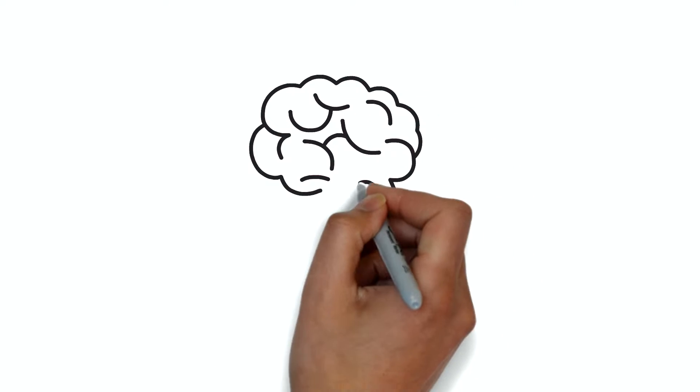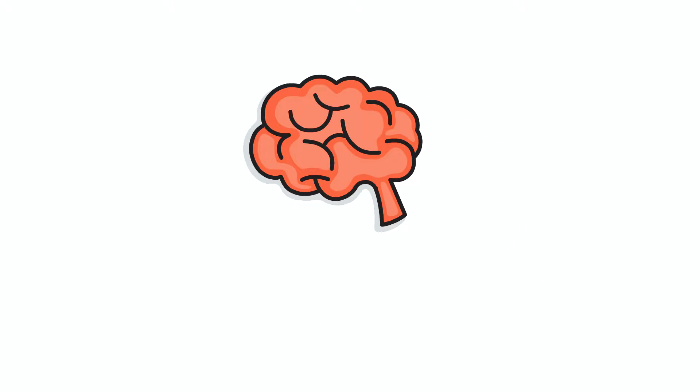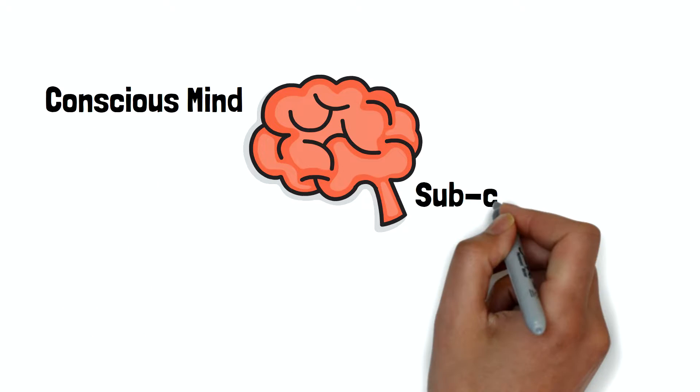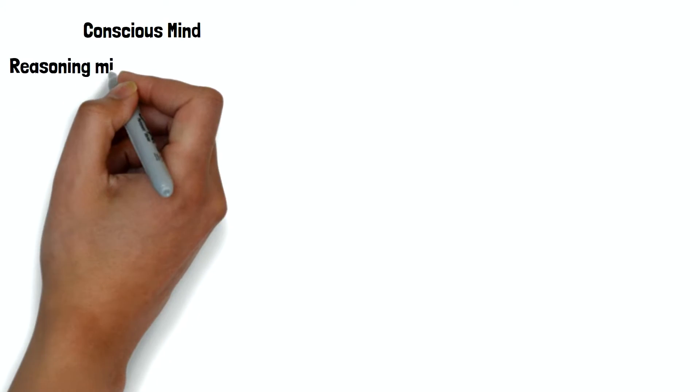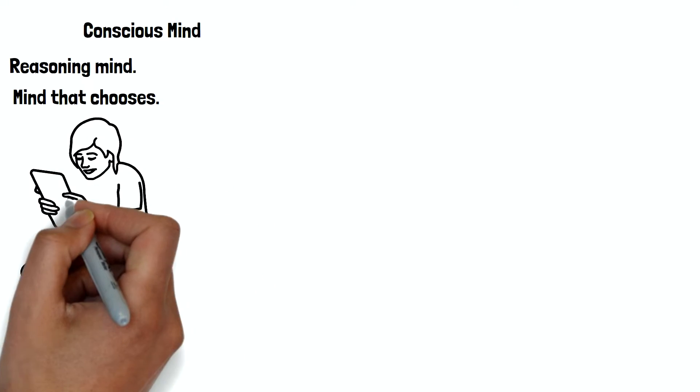So what is this subconscious mind? Actually, our mind is divided into conscious mind and subconscious mind. Conscious mind is the reasoning mind. It is the phase of mind that chooses. For example, you choose YouTube and choose to watch this video.